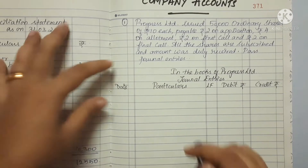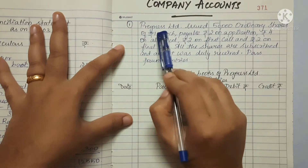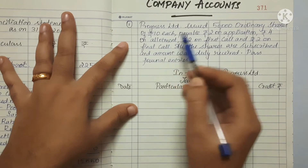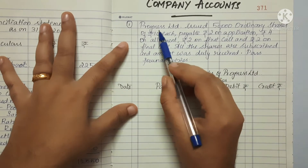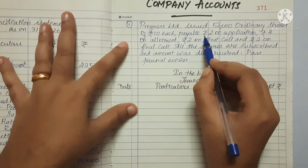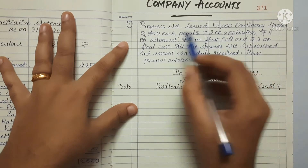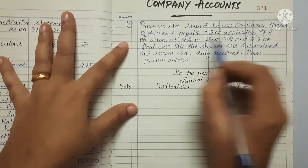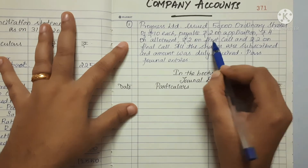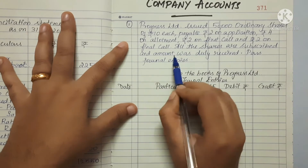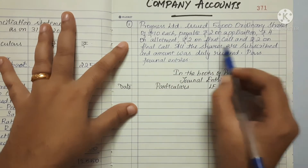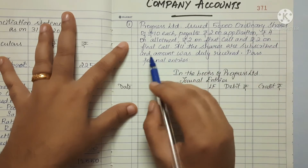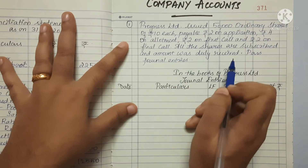Let's work through a question. Progress Limited issued 50,000 ordinary equity shares of 10 rupees each, payable as: 2 rupees on application, 4 rupees on allotment, 2 rupees on first call, and 2 rupees on final call. All 50,000 shares were subscribed, allotted, and all amounts were duly received. Pass the journal entries.